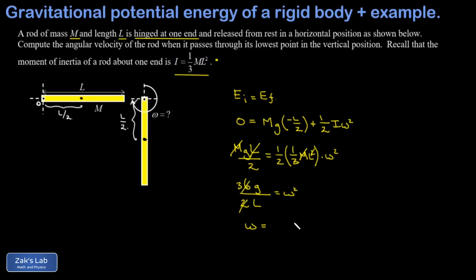And I'm going to go ahead and cancel a factor of 2 here giving me a 3g over L on that left hand side. I'm going to take the square root of that, I get that omega is the square root of 3g over L. And it's just a quick check on our work, I want to look at the units of omega.